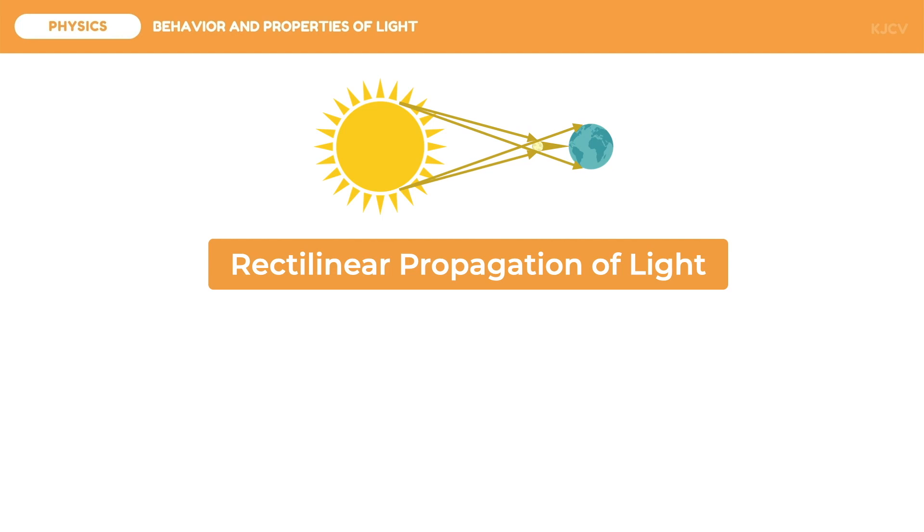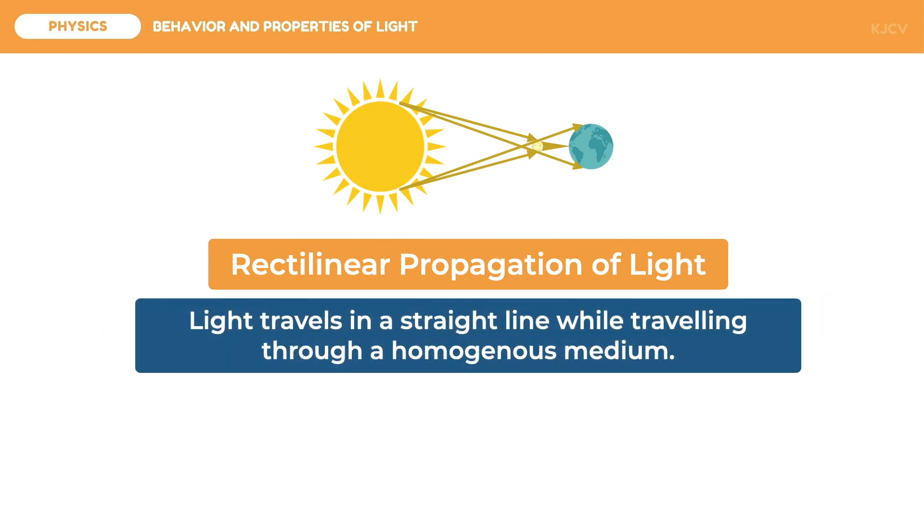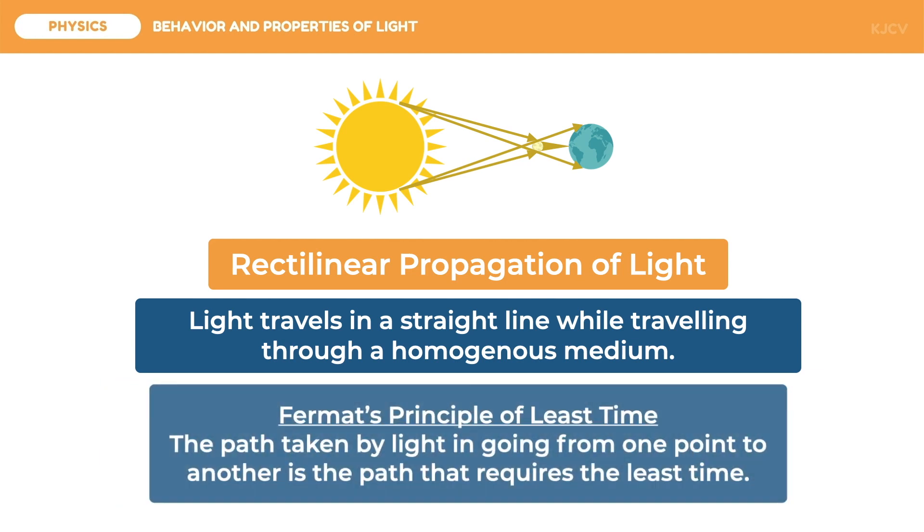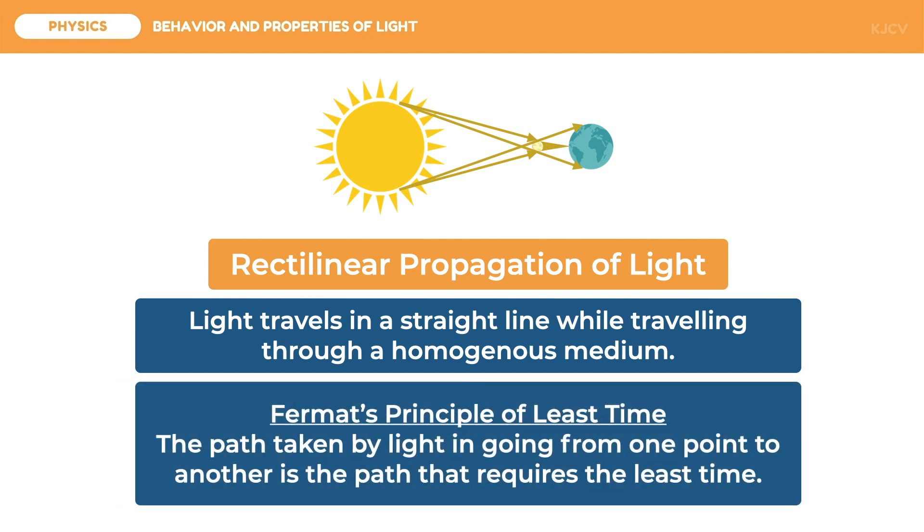In this property of light, it travels in a straight line while traveling through a homogeneous medium, meaning there will be no changes in the orientation and velocity of light. Aside from this, the straight line that will be traversed by the light will be the fastest or having the least time. This is called Fermat's principle of least time.